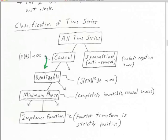You can divide causal time series into several different categories. One is time series that are realizable: one criterion is that the magnitude of its Z transform — adding up all the coefficients — is less than infinite. You can have causal time series that are non-realizable: they start at a certain time with no negative-time component, but then they blow up. To be realizable, they've got to obey both criteria. And one of the categories of realizable time series is the so-called minimum phase type.